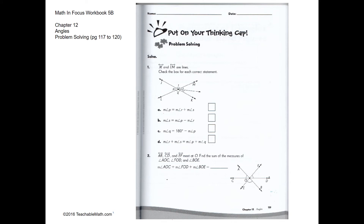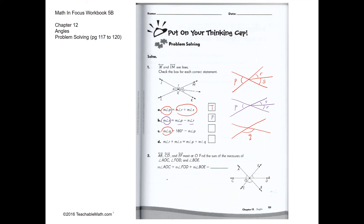Problem solving. Is P the same as R plus S? Yes, it is true because they are vertically opposite angles. Is S the same as P minus R? No, that's not true — that is false. Is angle Q the same as 180 minus P? Yes, that's true because P and Q will be 180 degrees — they make a straight line.